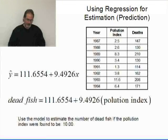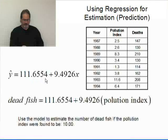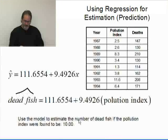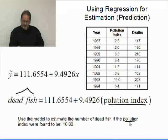Now, here's our model: Y hat equals 111.6554 plus 9.4926x. That's really the estimated dead fish, and x is the pollution index, which is spelled wrong, but that's okay, you can figure it out.